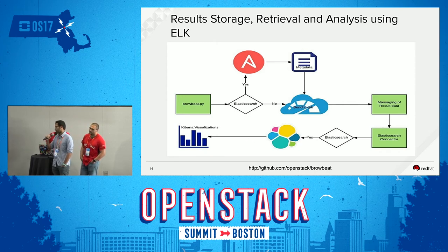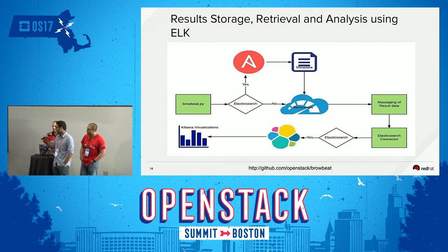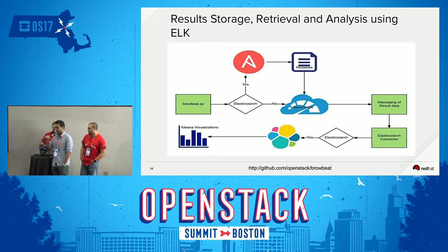Along with system facts, Ansible also gathers OpenStack-specific parameters like how many Neutron workers you had and how many Nova workers. That is dumped as metadata, and you get result data from the benchmark. Browbeat munges the data, combining the metadata with result data, and with our Elasticsearch connector it ships everything to Elasticsearch — Kibana is the front end for all your slicing, dicing, and visualizations.